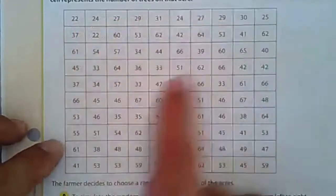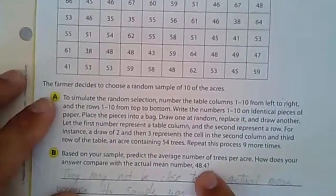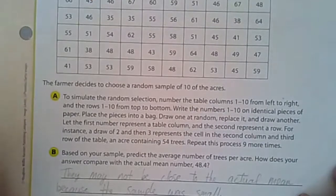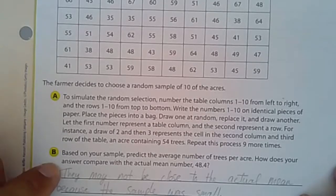So what they did is if you add up all these numbers and divide by 100 you would get 48.4. And I'm saying your sample mean of those 10 numbers may not be close to the actual mean because the sample is small.